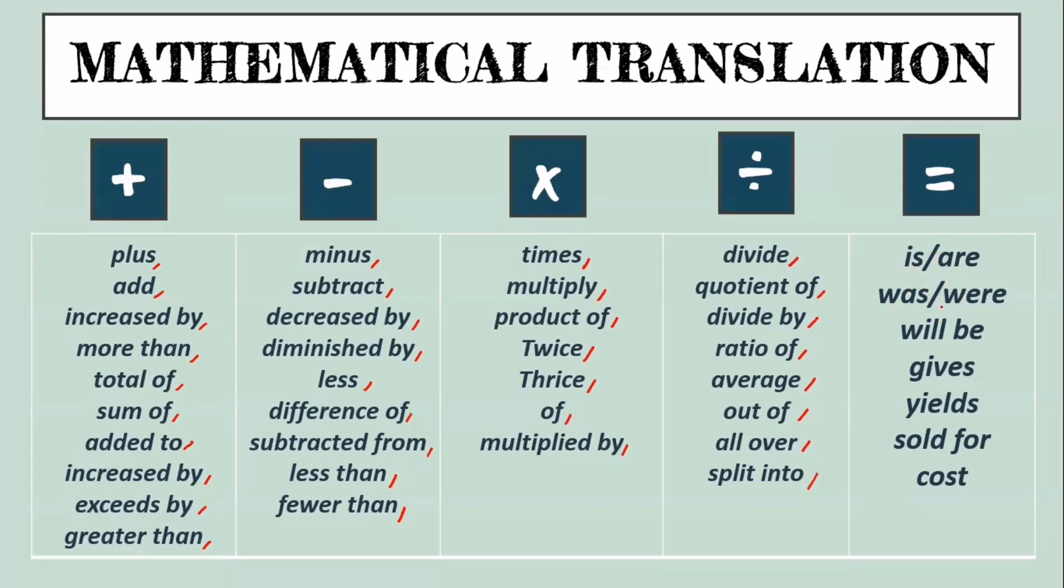And then for equals, we can use the word is or are, was or were, will be, gives, yields, sold for, and cost. But be careful with 'is.' It depends on how 'is' is used. It's not always equal just because there's 'is.' It depends on the construction of the sentence.